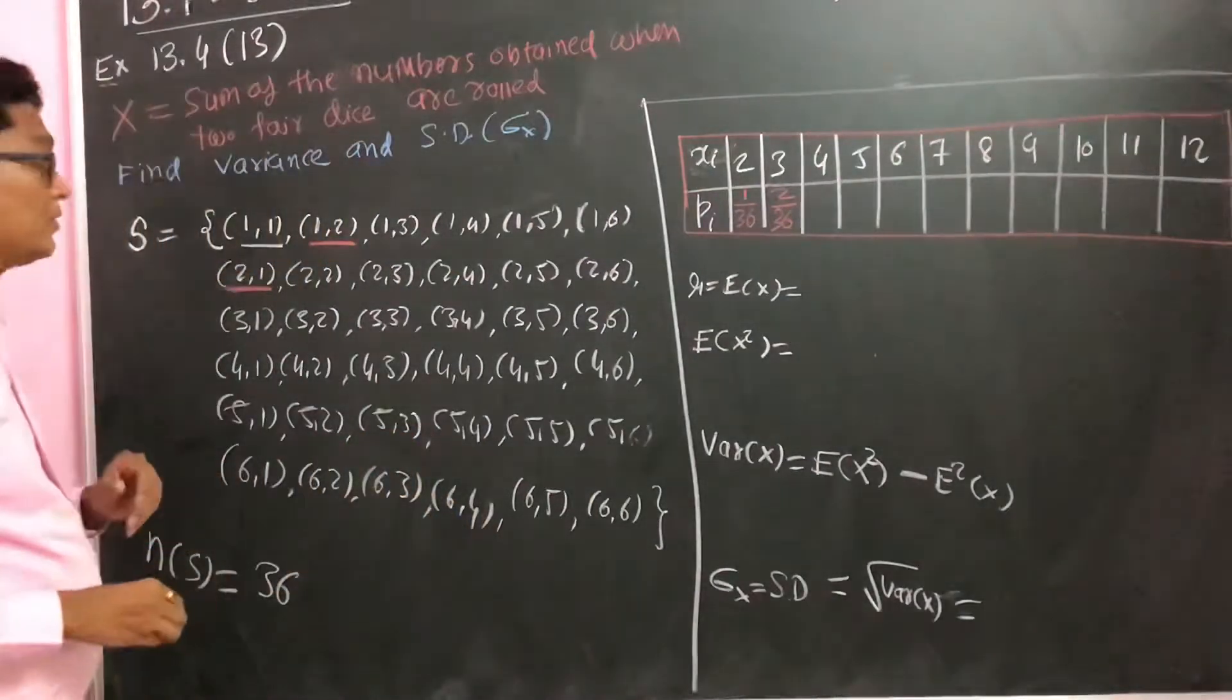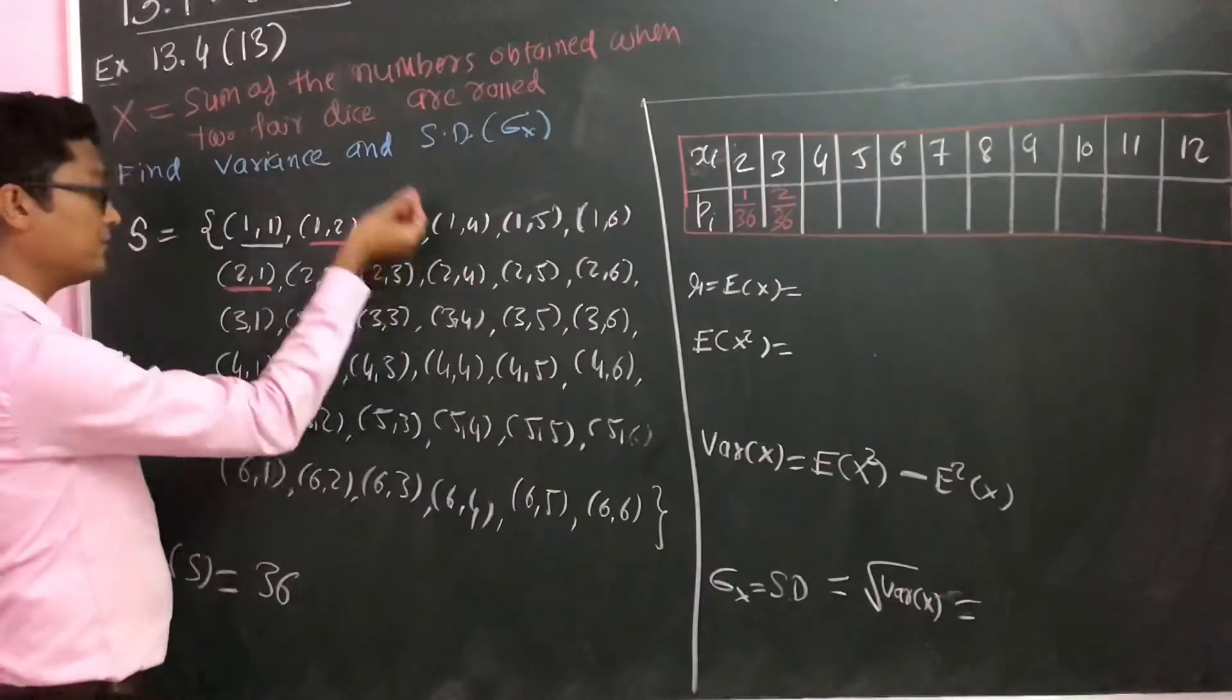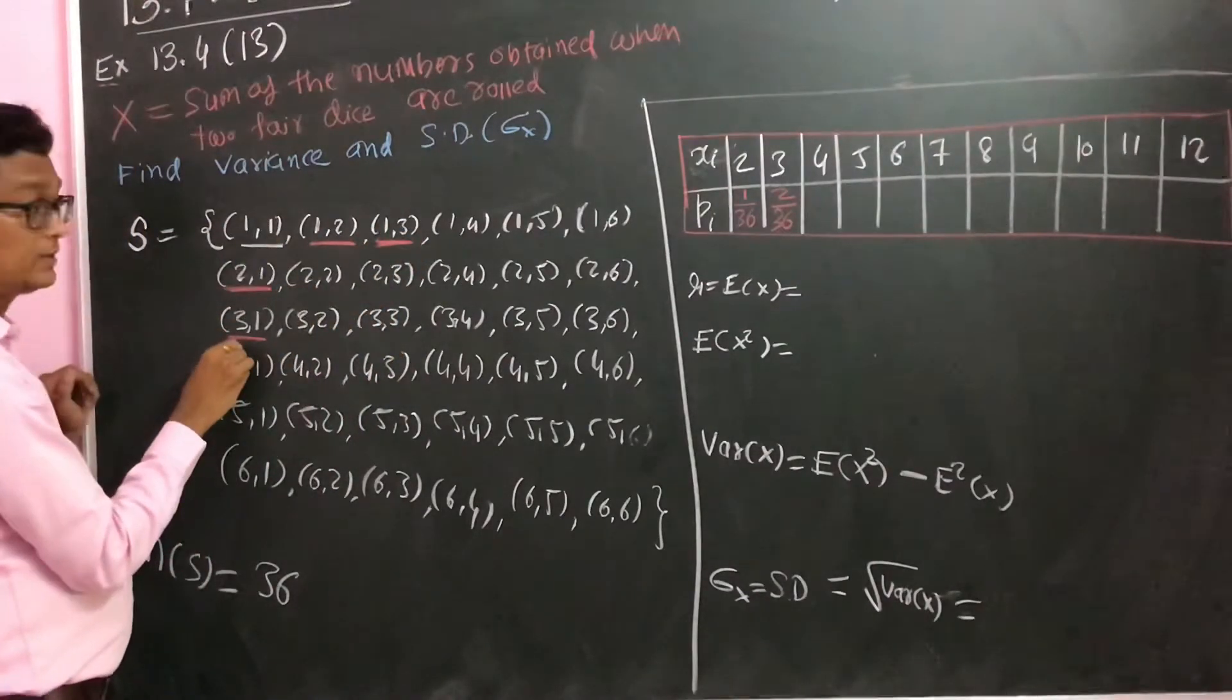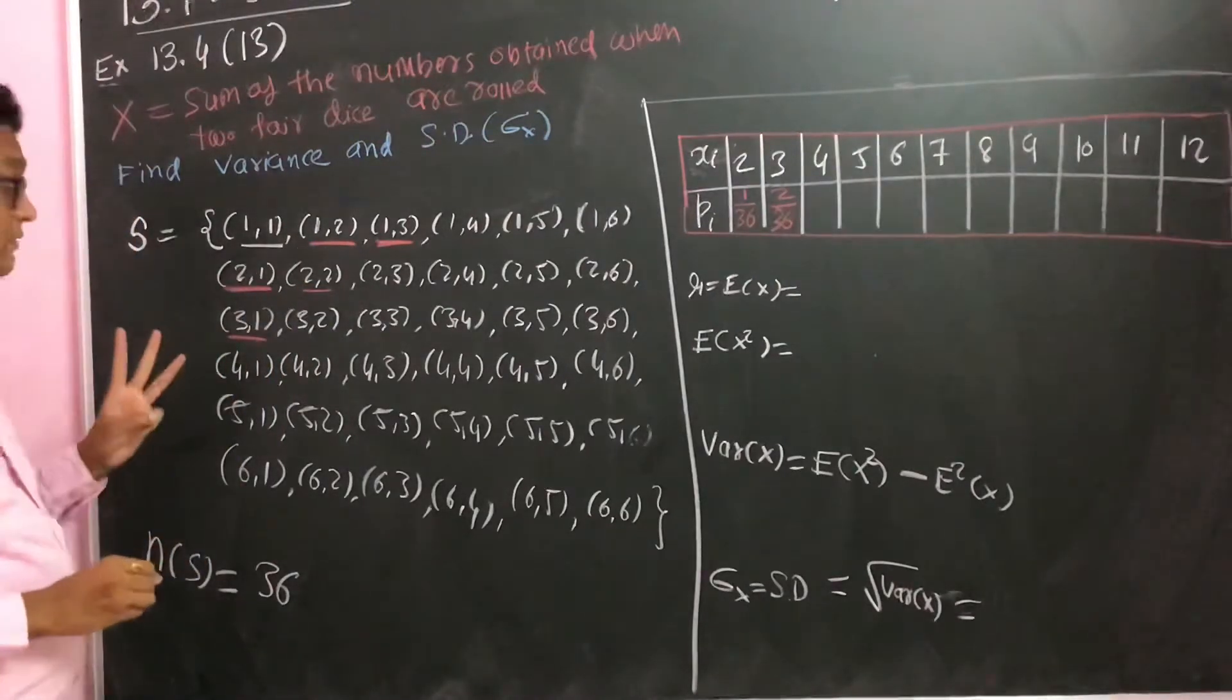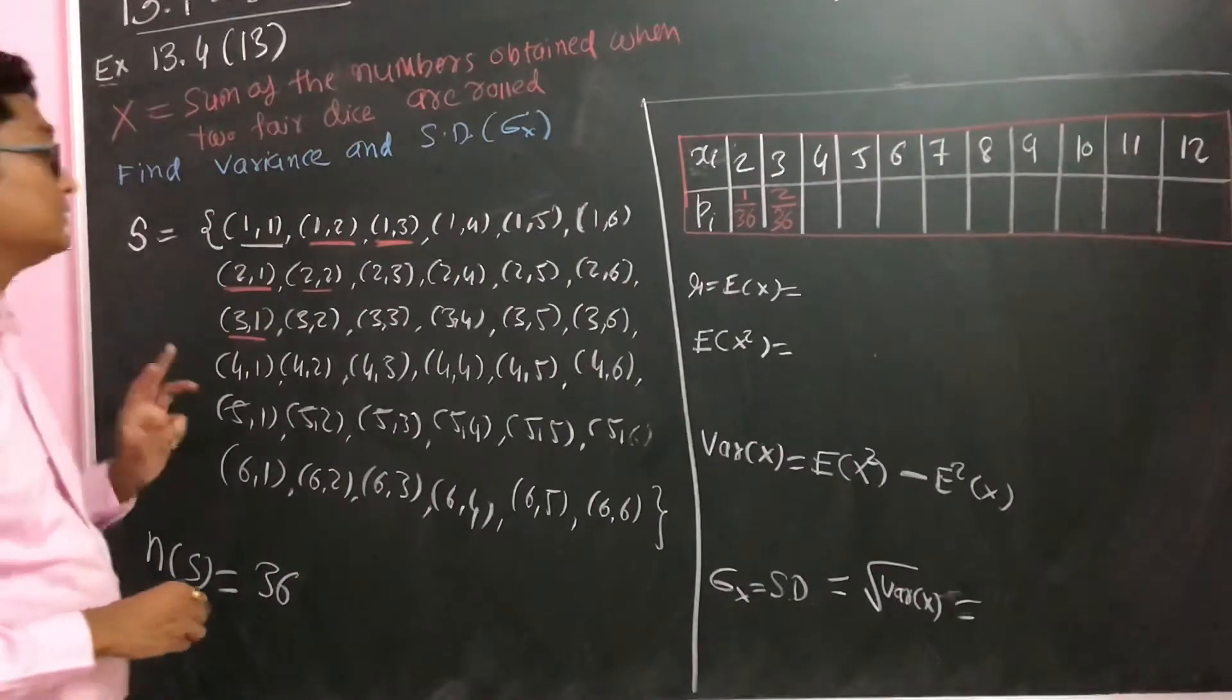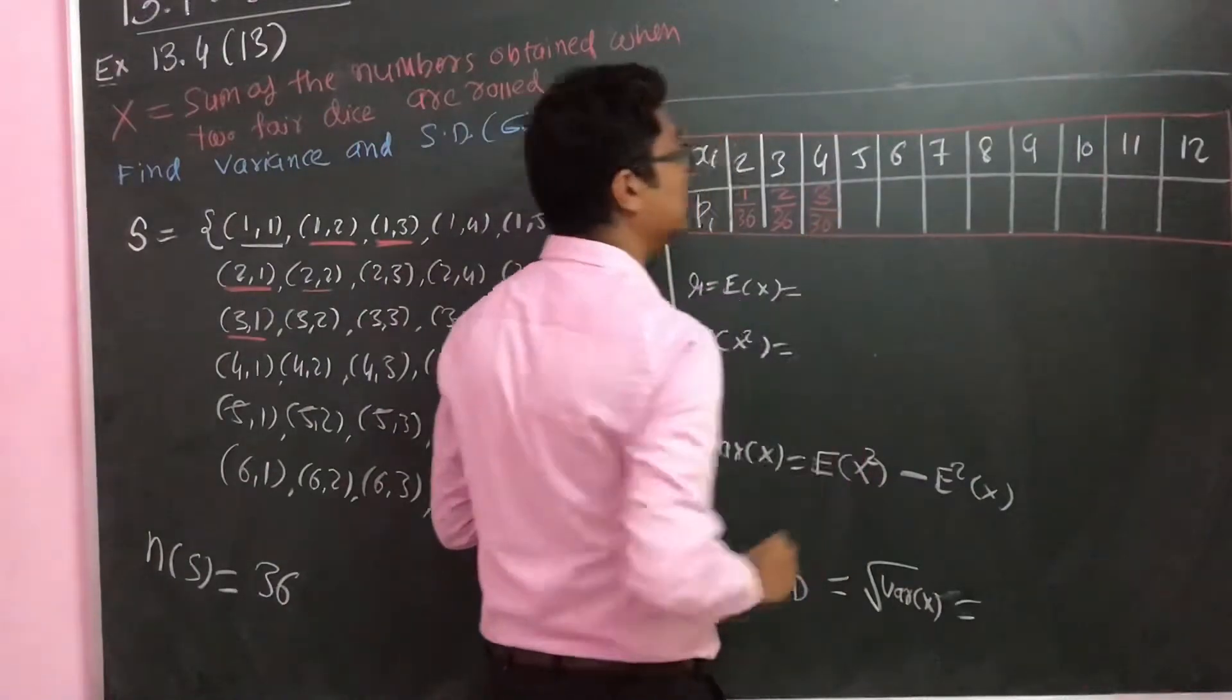If we look at the sum equal to 3, it's possible for 1-2 and 2-1. These two combinations equal 3. So I can write it like 2 by 36. For 4, it's possible for 3-1, 1-3, and 2-2, so that is 3 combinations. So here we have 3 by 36.